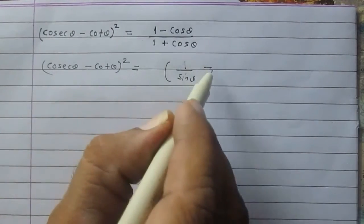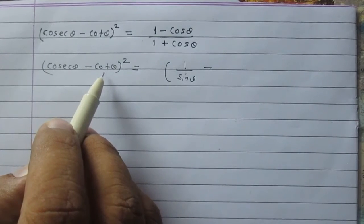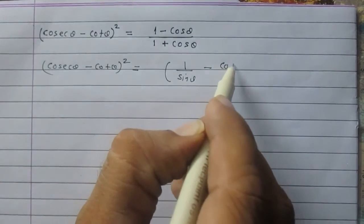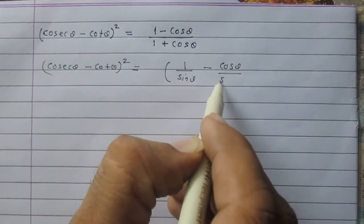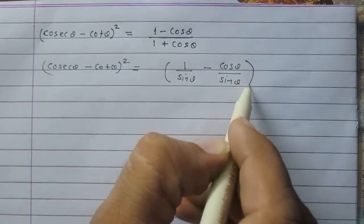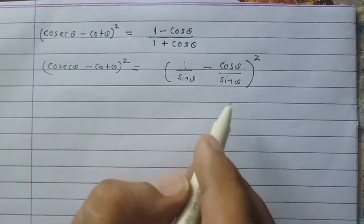Negative cot theta. Cot theta is equal to cos theta upon sin theta, and then whole square.